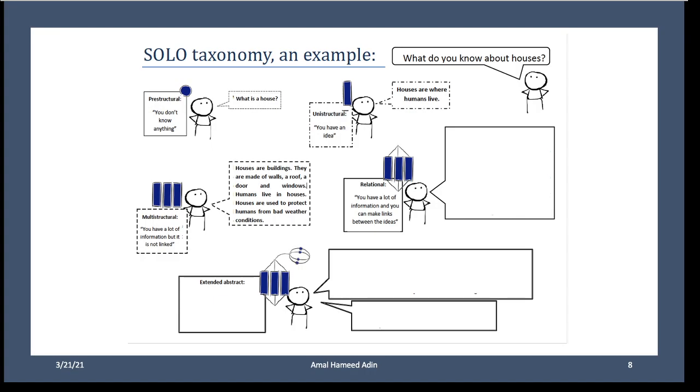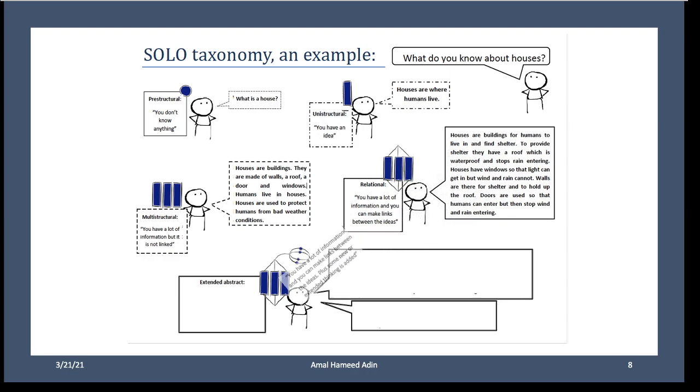While in the relational, he has more knowledge, he can connect ideas. So he might say 'Houses are buildings for humans to find shelter, to provide shelter. The house has a roof which protects the house from the rain,' so he knows the importance of the roof—he's connecting information.